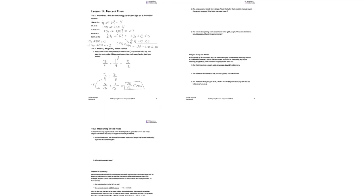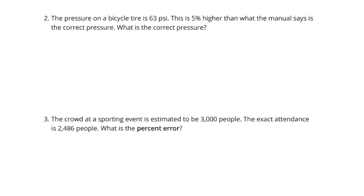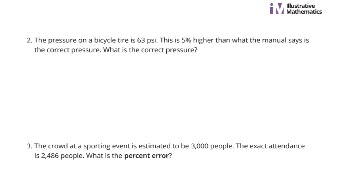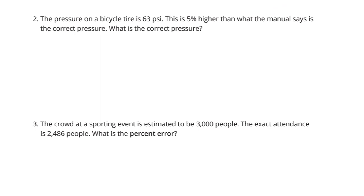Moving on now to question two. The pressure on a bicycle tire is 63 pounds per square inch. This is 5% higher than what the manual says is the correct pressure. What is the correct pressure? Well, if we assume that the correct pressure is P, we can then add the 5% extra that we're higher than the manual says. And that's going to result in 63.